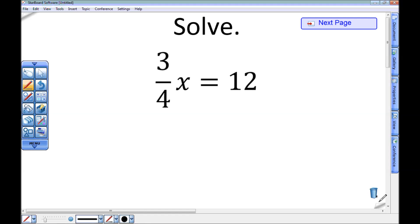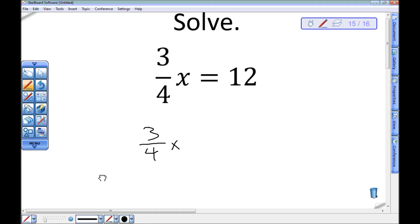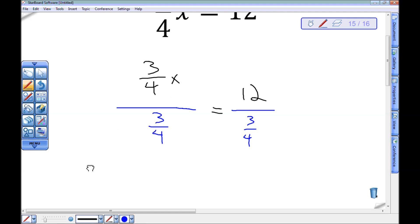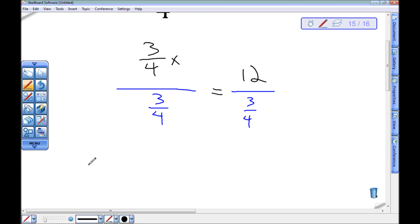How about here? Here's 3 fourths times x equals 12. So to solve this equation, looks like divide, right? I have 3 fourths times x. So I'm going to divide that by 3 fourths, and this equals 12, so I need to divide that by 3 fourths. 3 fourths times whatever number that is divided by 3 fourths will just be that number.